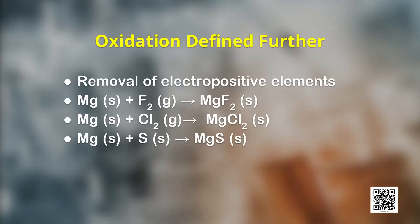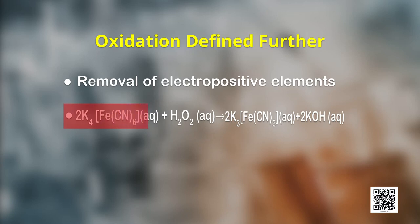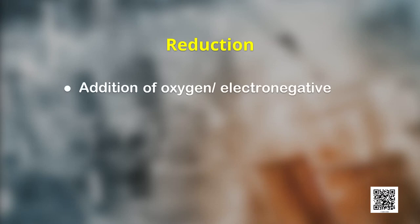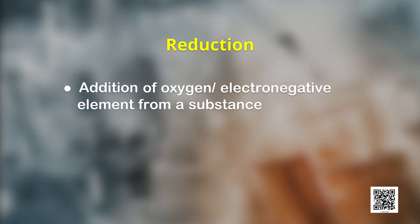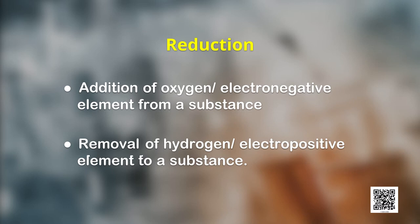As knowledge of chemists grew, it was natural to extend the term of oxidation for reactions which do not involve oxygen but other electronegative elements. The oxidation of magnesium with fluorine, chlorine and sulphur happens by loss of the electropositive element, that is magnesium. In the second reaction, potassium ferrocyanide changes to potassium ferricyanide by the removal of the electropositive element potassium. To summarize: oxidation is defined as addition of oxygen or electronegative element to a substance, or removal of hydrogen or electropositive element from a substance.